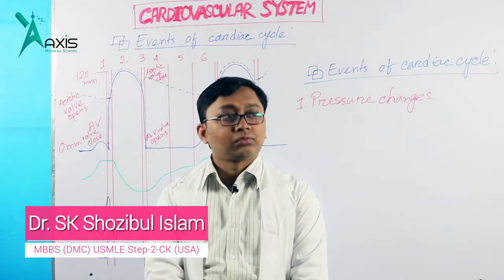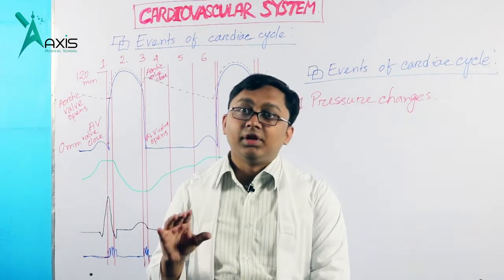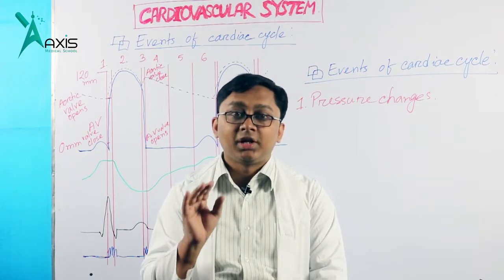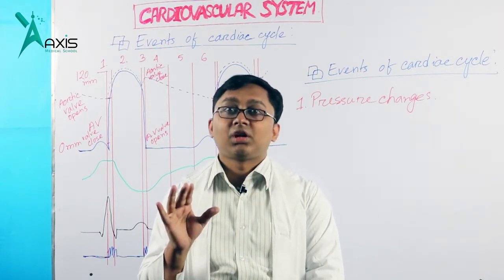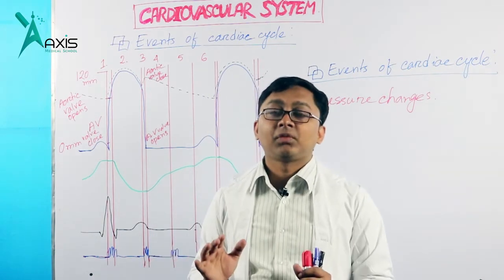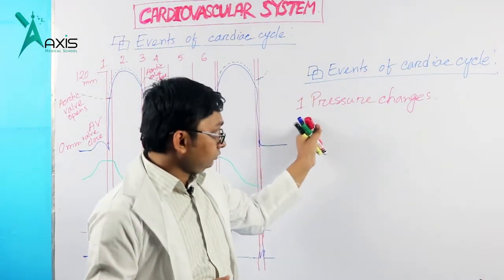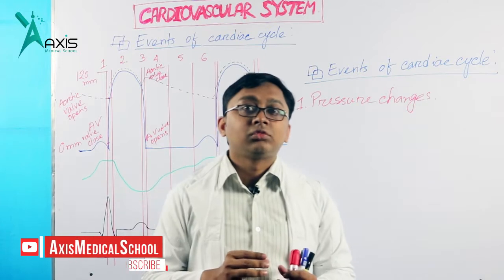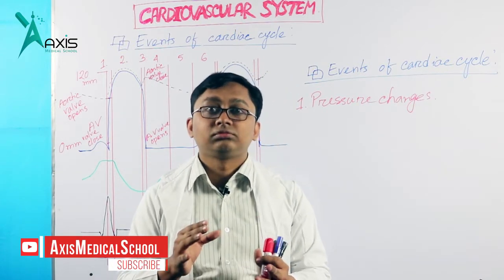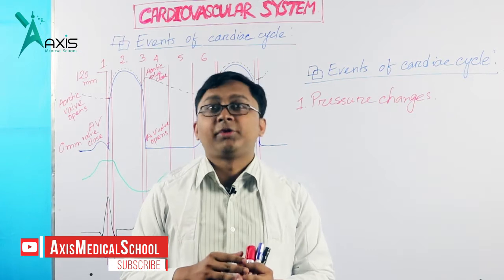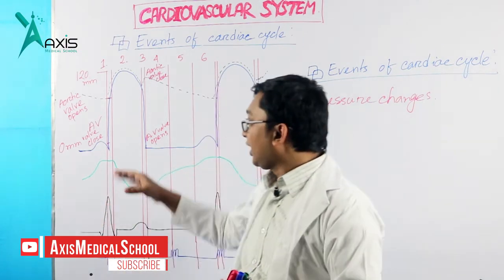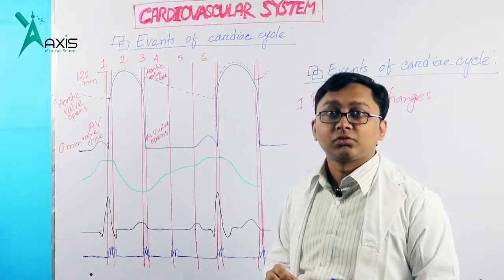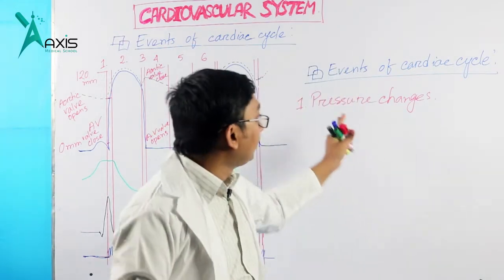During this period — that is from one beat to another beat — the events that occur include: number one, pressure changes. Like your ventricle, atrium, and your aorta, pressure changes occur during this whole period. Here I have shown the graphical representation of those events.